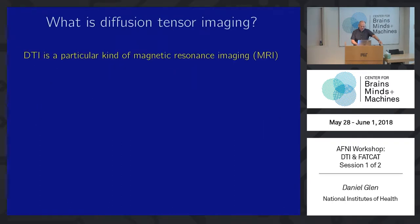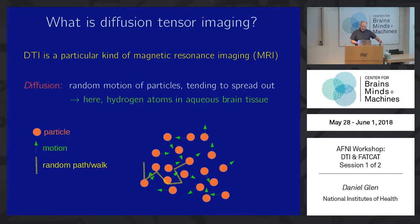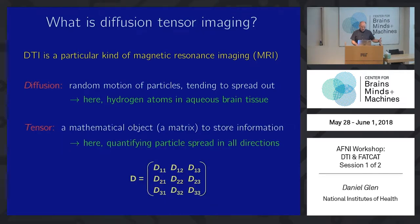These are some of the topics we'll cover. DTI is a kind of MRI imaging where we're looking at diffusion in the water. In general, water will just diffuse randomly, but we're going to describe this diffusion in the form of a tensor. This tensor is actually made out of a symmetric matrix.